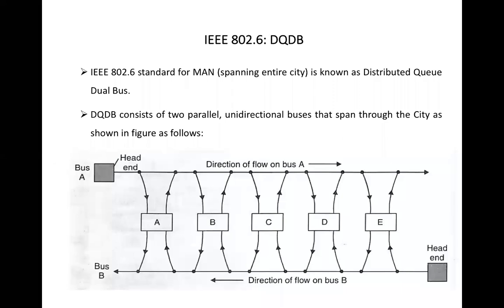As I told you, IEEE 802.6 standard is for metropolitan area network, which is also known as distributed queue dual bus. So it means a queue that is distributed among multiple computers, and we have dual bus, means two buses in the network. As you can observe in the diagram, we have two buses here, bus A and bus B.